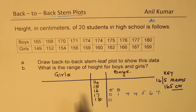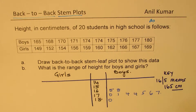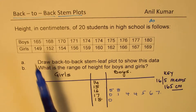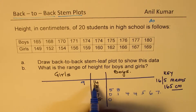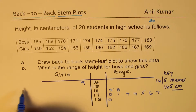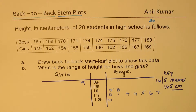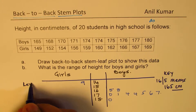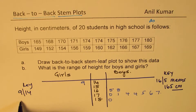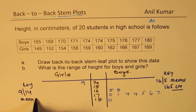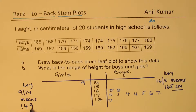Now let's try to place the data for girls and make it a back-to-back STEM and leaf plot. So 149 — we have 14 in the stem, we'll place 9 here on the left side. The key for girls is: if I write 9 | 14, it really means 149. That is the key.